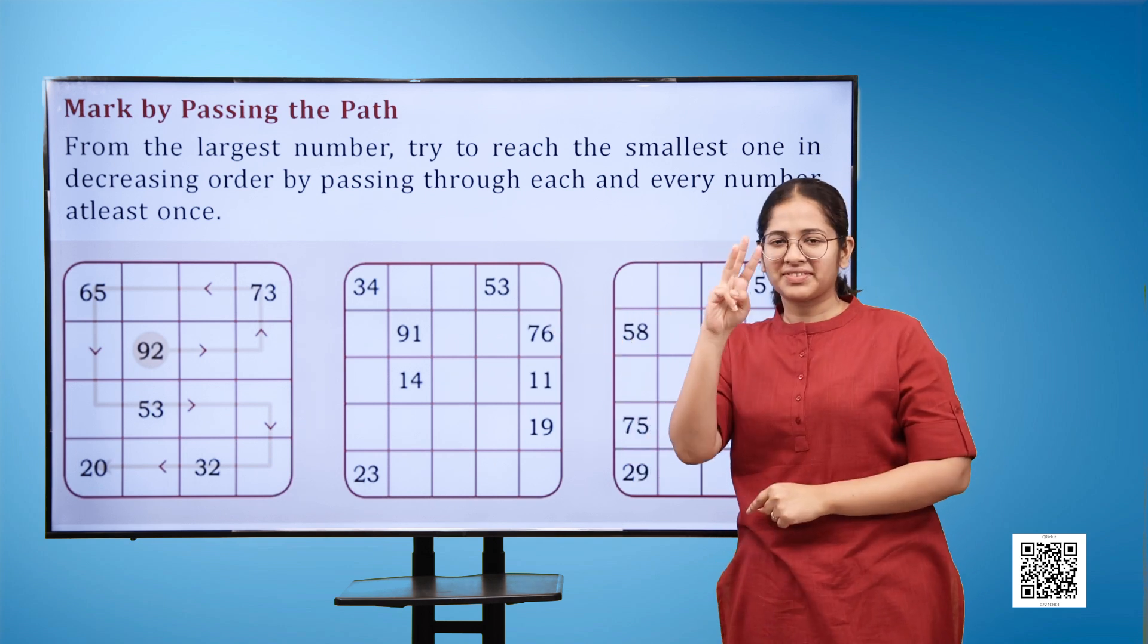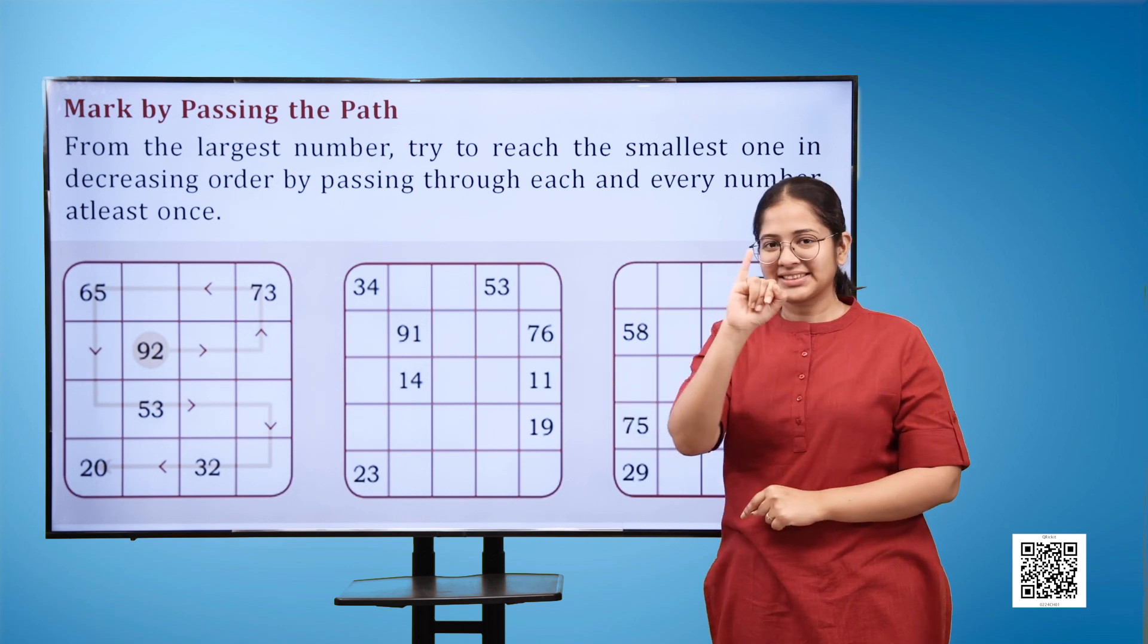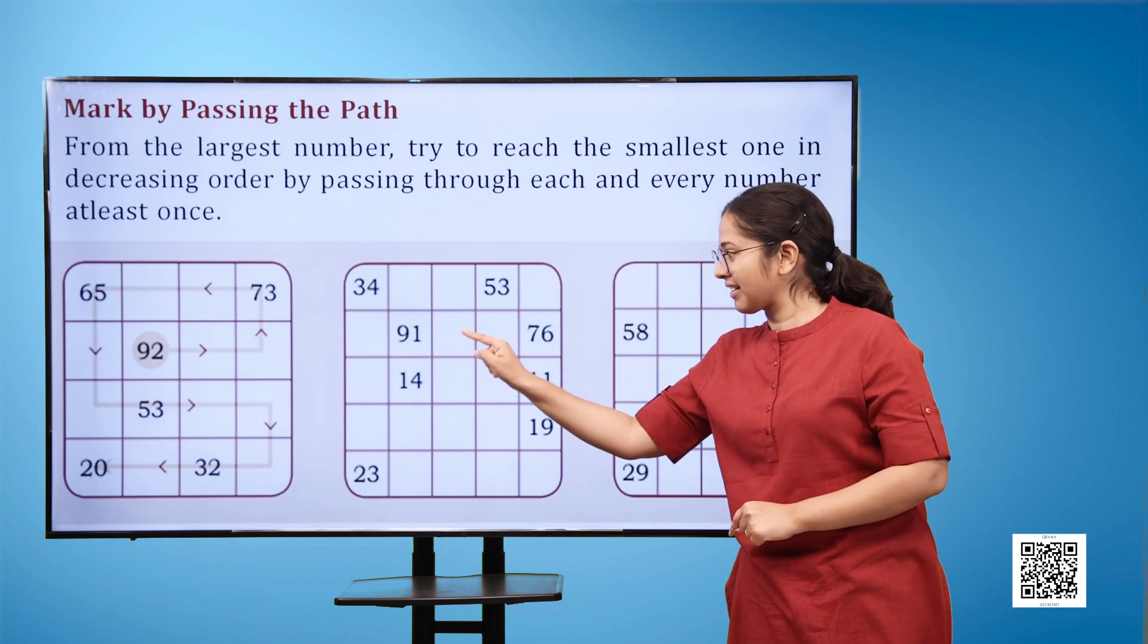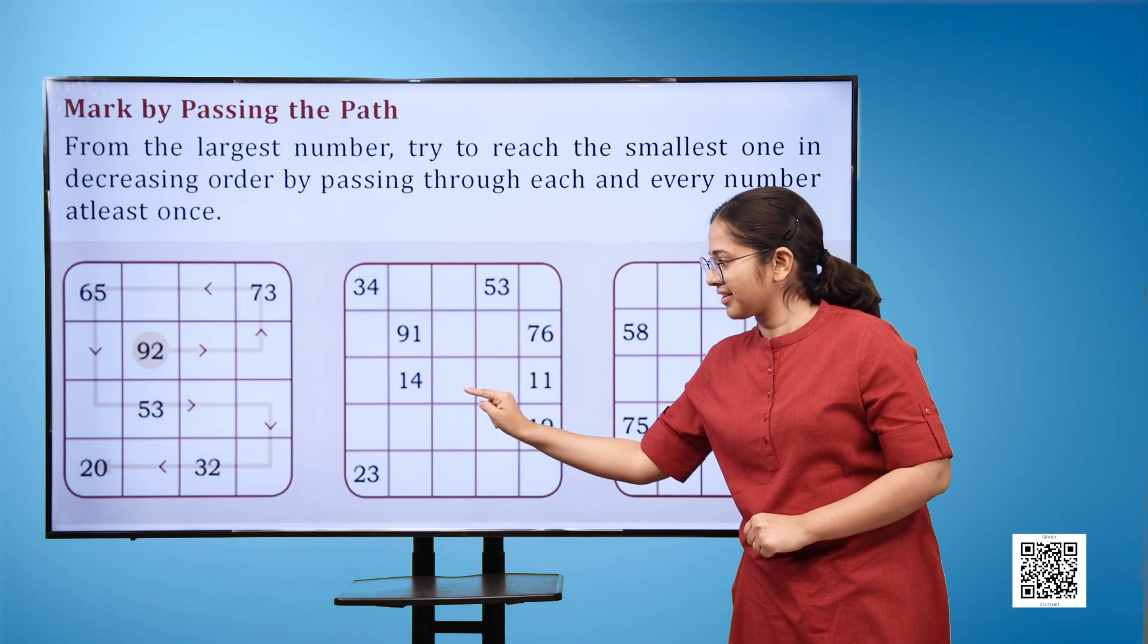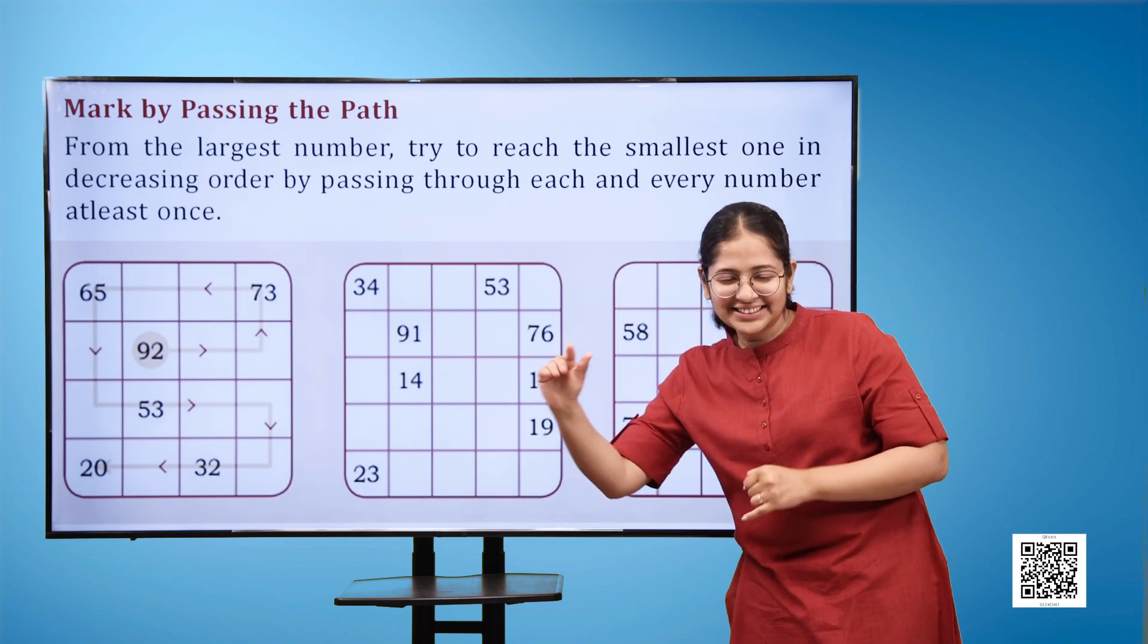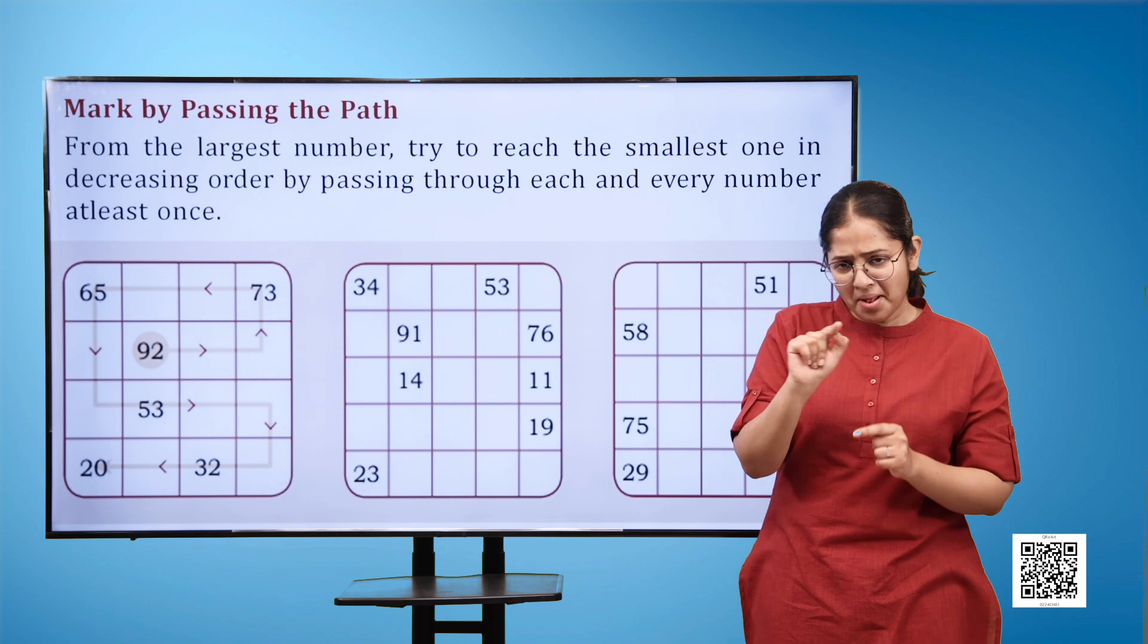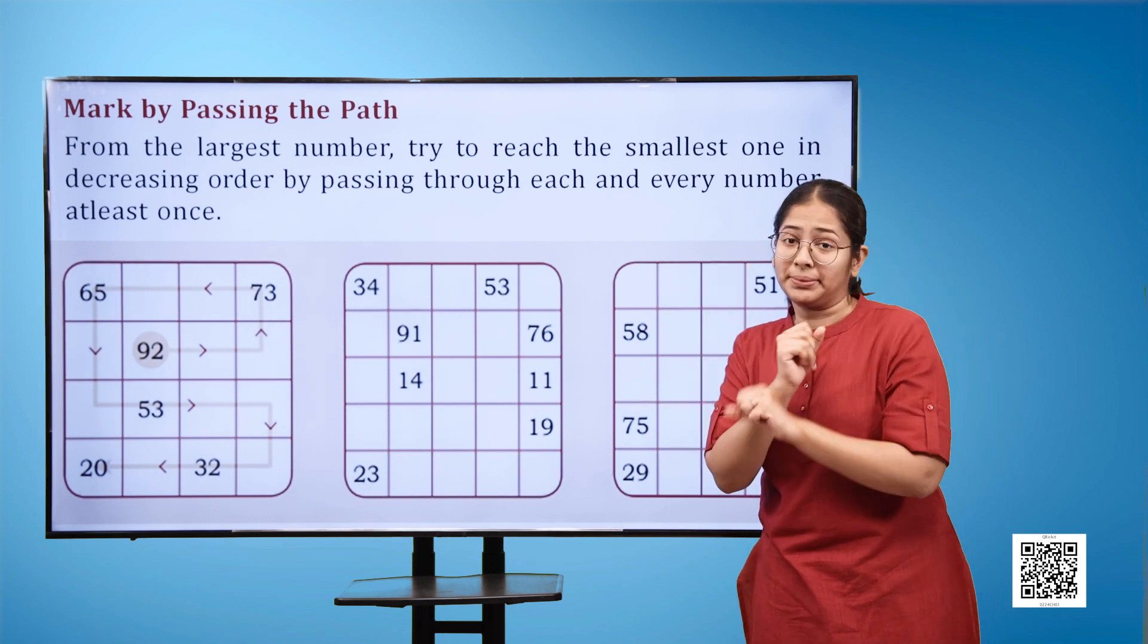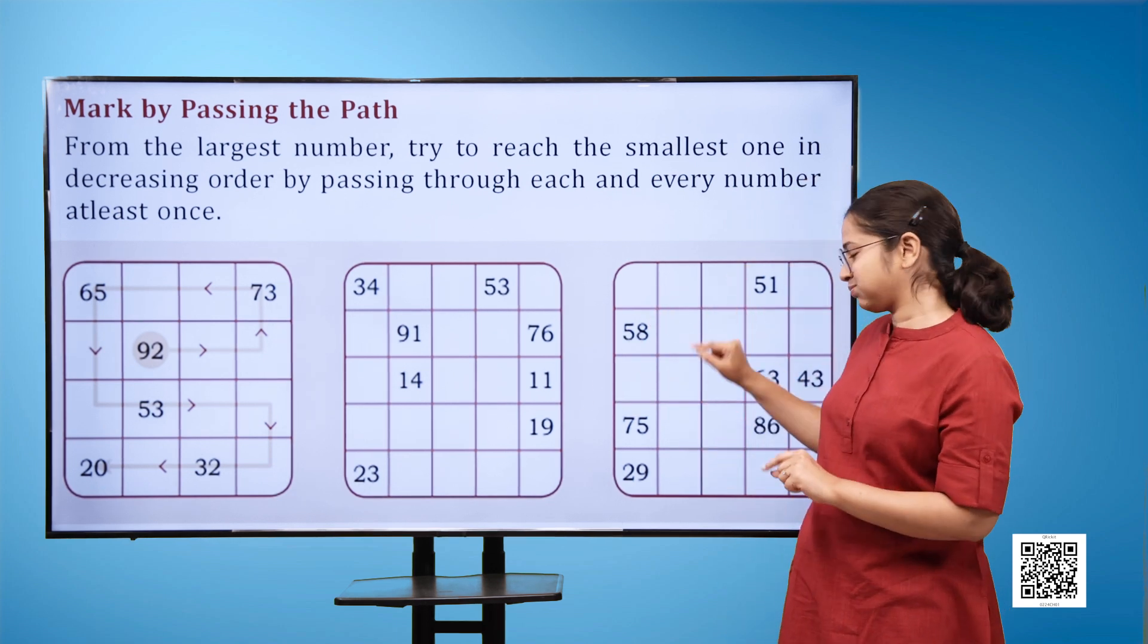In the first image: 65, 73, 92, 53, 20, and 32. Now we have to reach the smallest number, that is 20, and we have to start from the largest number, which is here 92.